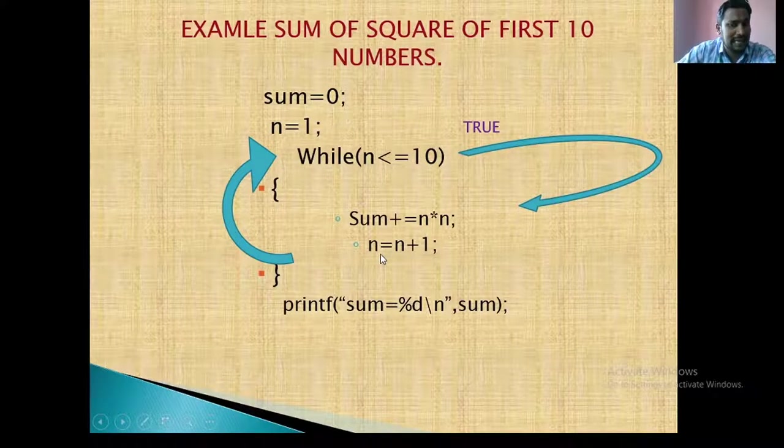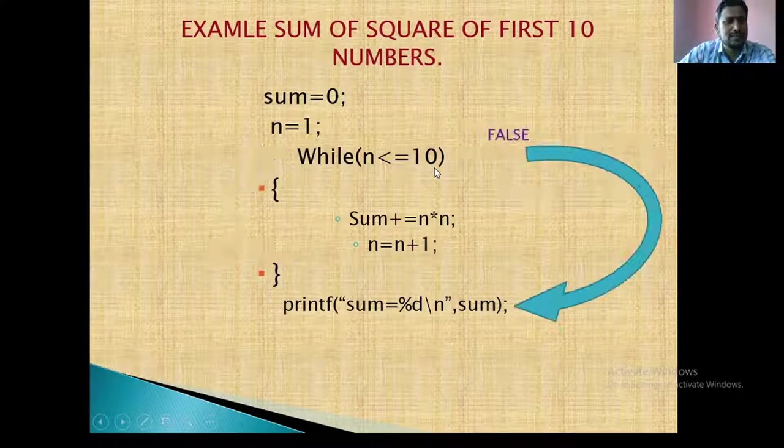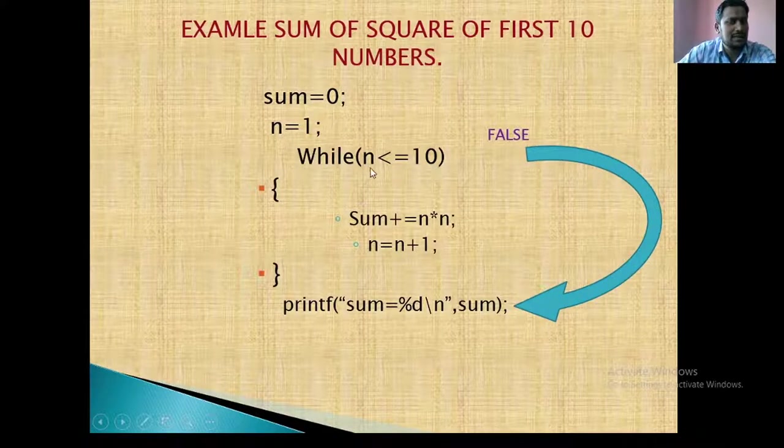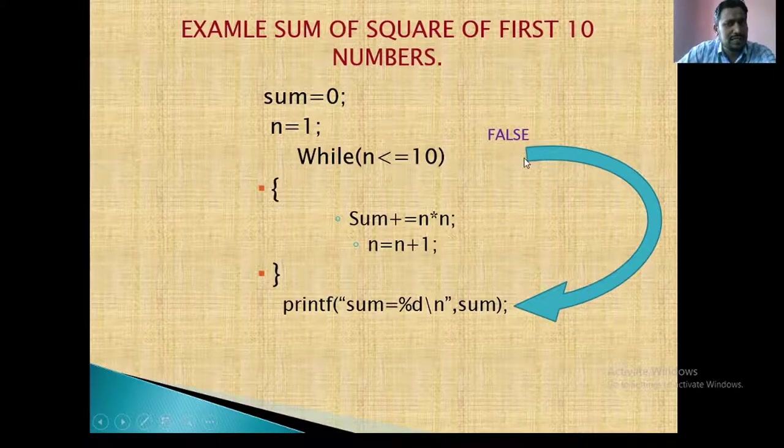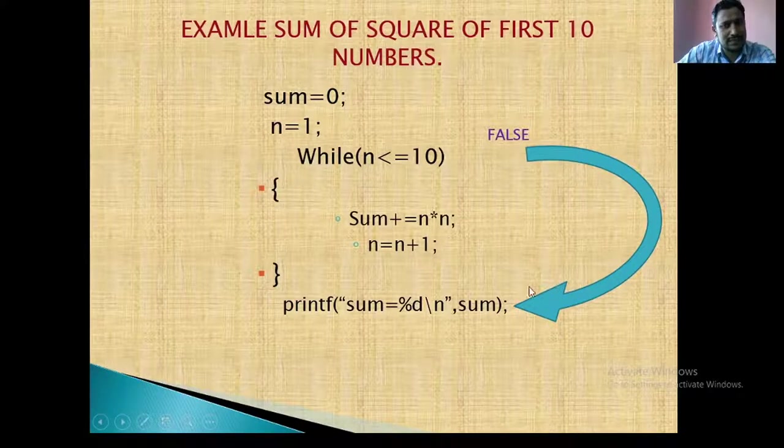When n is 11, so 11 is less than or equal to 10, it is false. Then control is escaped from the loop. Then the next statement is printf. So printf is working.